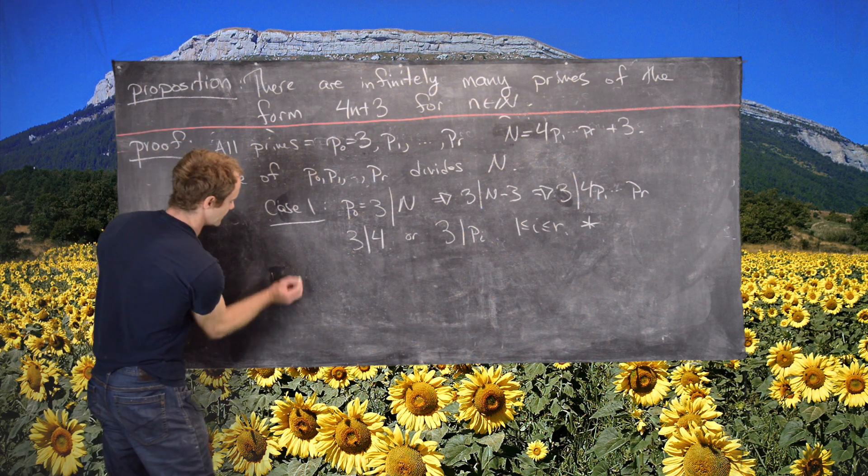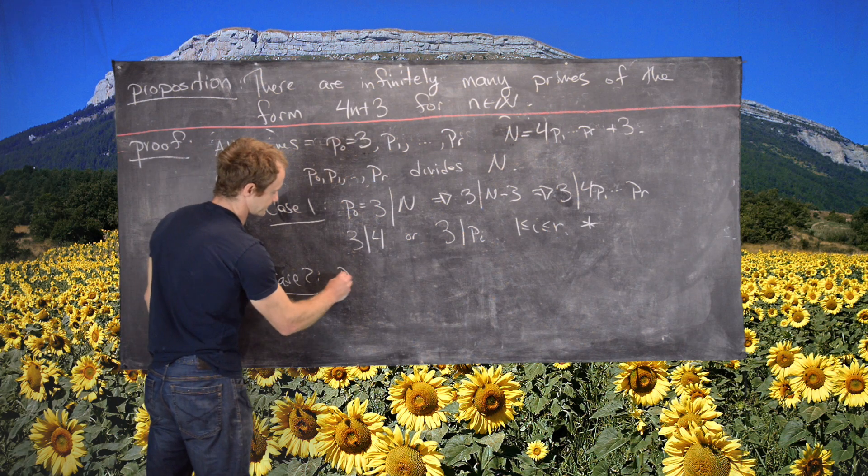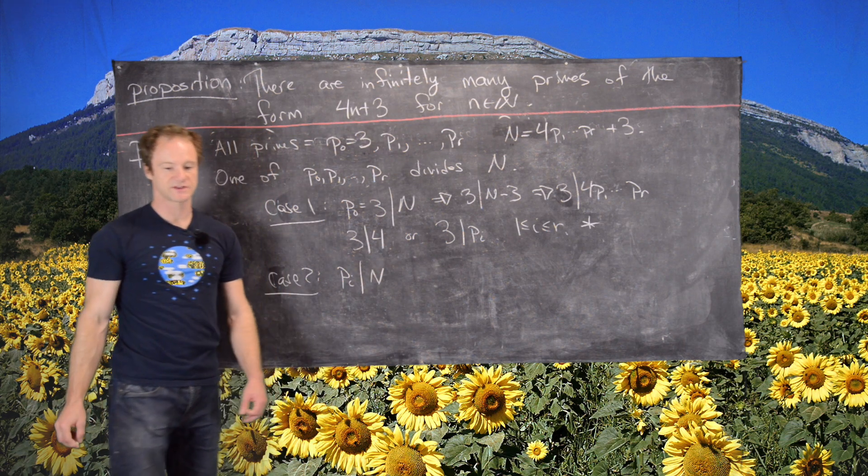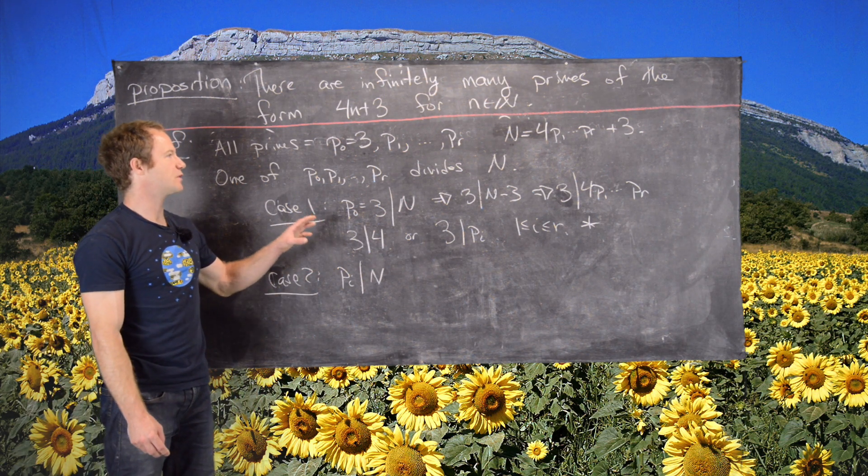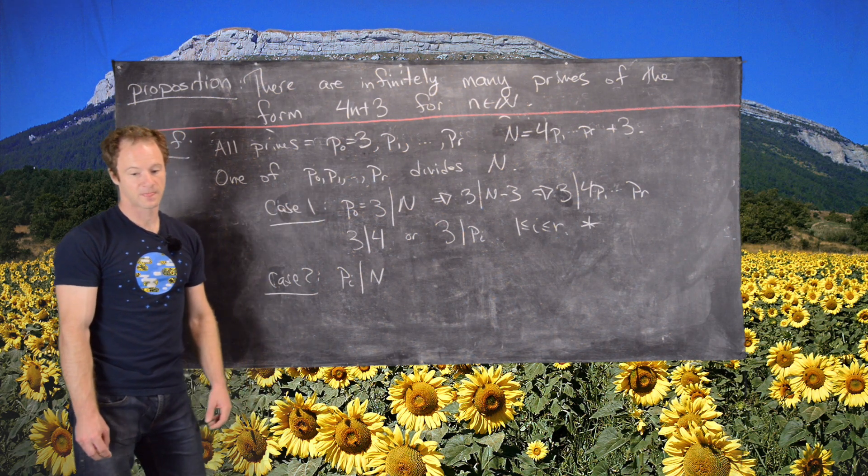So now we'll look at case 2, and that is PI divides n for some i between 1 and r, so not including 0.